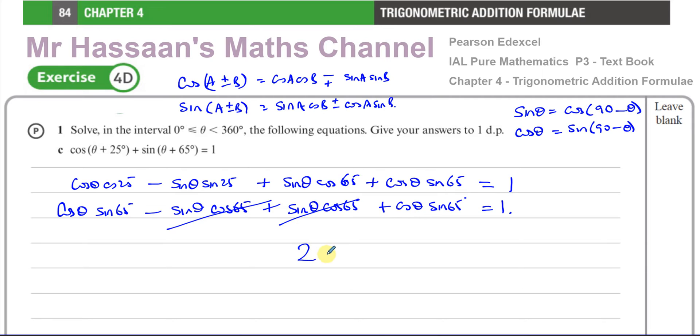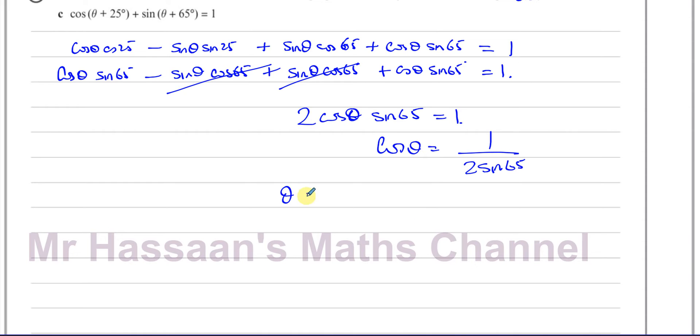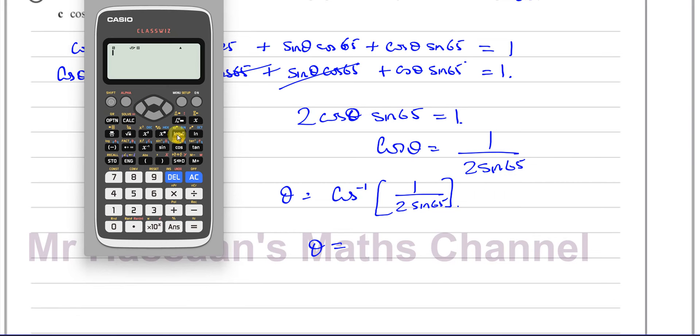So you have 2cos(θ)sin(65°) = 1. That means cos(θ) = 1/(2sin(65°)). We can solve this equation by finding the inverse cosine of this ratio. Take our calculator in degree mode: inverse cosine of 1/(2sin(65°)). That gives us one solution: 56.517 degrees.